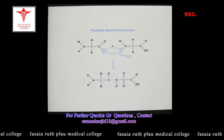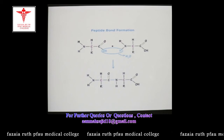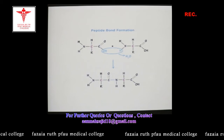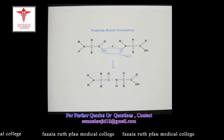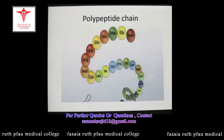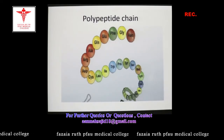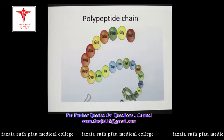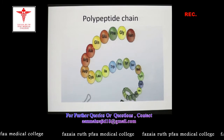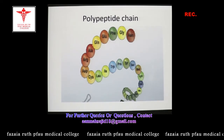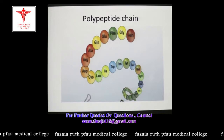During peptide bond formation, the carboxyl group of one amino acid and the amino group of the other amino acid contribute. This figure shows a polypeptide chain made up of multiple amino acids linked together by peptide bonds, forming the polypeptide chain.